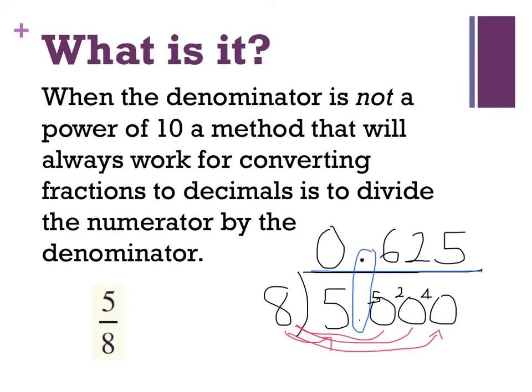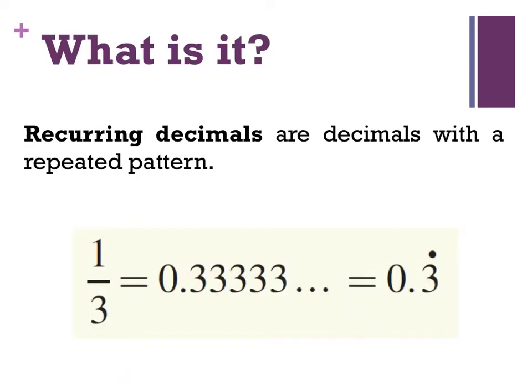Some of you might want to pause this tutorial, rewind, and watch that one again. Because that is the trickiest one. The trickiest one is when I don't have a fraction that has a clear power of 10, and I have to divide. That's saying 5 divided by 8. Not 8 divided by 5, but 5 divided by 8.